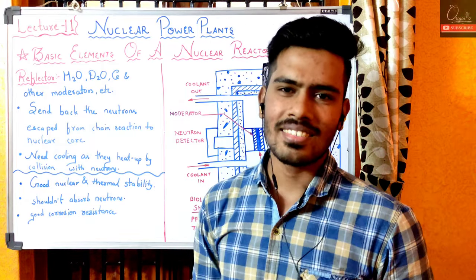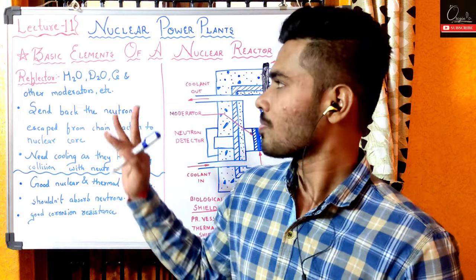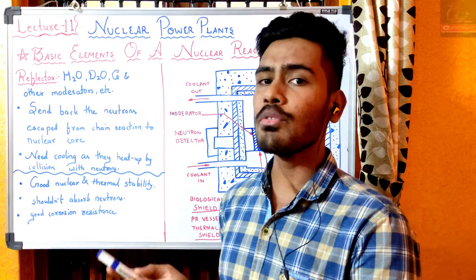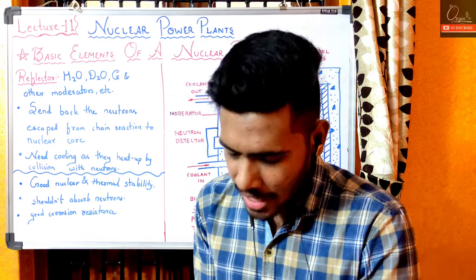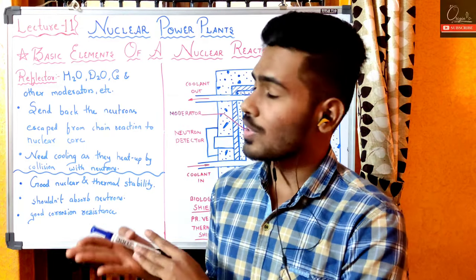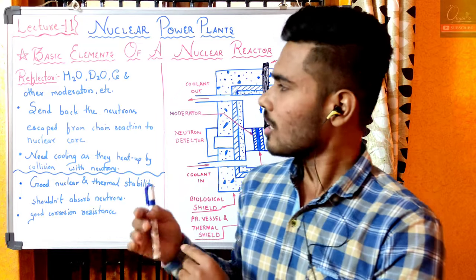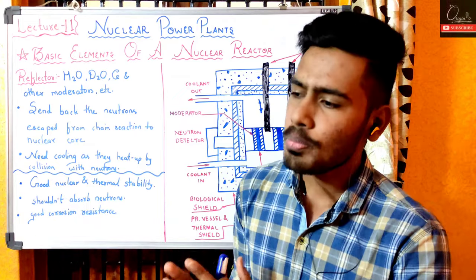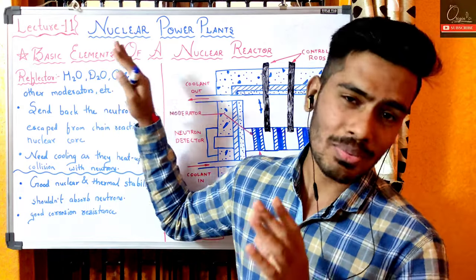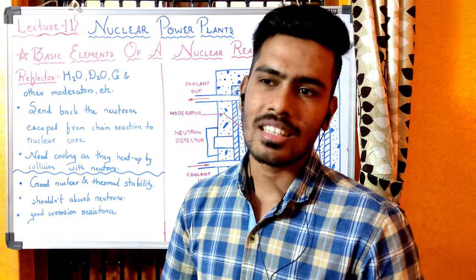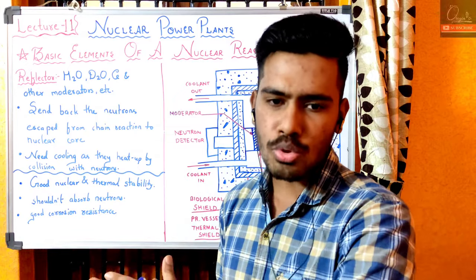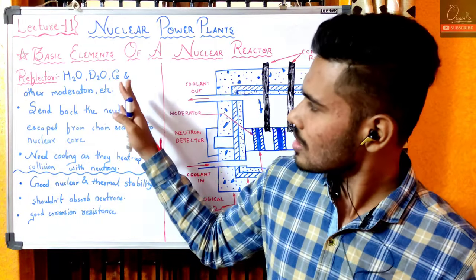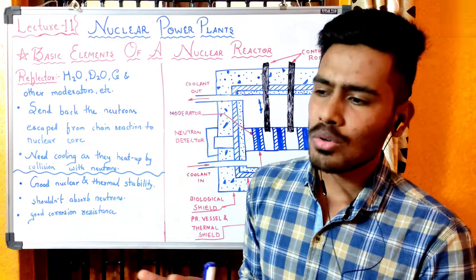ज्यादातर liquid ही use करना prefer करते हैं, because अगर एक ही चीज़ से तीन-तीन काम हो रहे हों तो कौन अलग से खर्चा करेगा। जो H2O और D2O है - water and heavy water - यह moderator में भी आ गए, coolant में भी आ गए, and reflector में भी आ गए। तो अगर इनमें से किसी एक को use करो तो तीनों का काम हो जाएगा। इनका flow चलता रहता है तो जो neutrons भाग रहे हैं उनको भी automatically flow के साथ वो fuel की तरफ ले आते हैं।